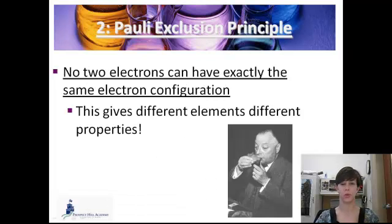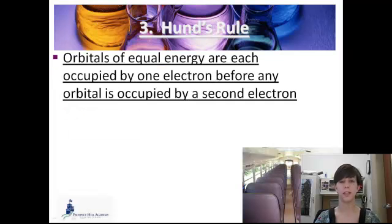Rule number two is called the Pauli exclusion principle. There's Dr. Pauli down at the bottom. No two electrons can have exactly the same configuration. Different elements have different configurations, so no two electrons can be in exactly the same place. And then number three, my favorite, the Hund's rule.